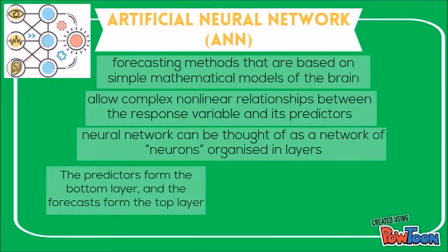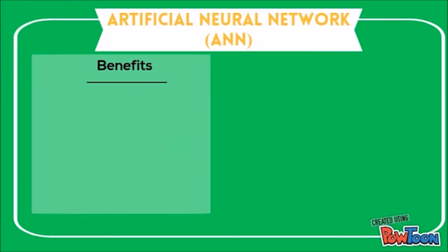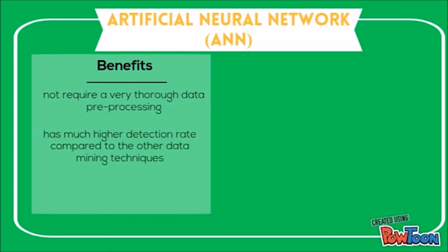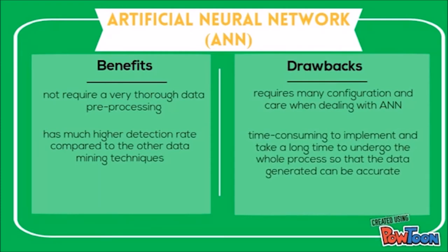The predictors form the bottom layer and the forecasts form the top layer; there may be intermediate layers containing hidden neurons. Its benefits include not requiring very thorough data pre-processing and having a much higher detection rate compared to other data mining techniques. For its drawbacks, ANN requires many configurations and care, and it is also time-consuming to implement.